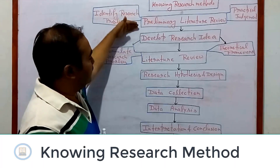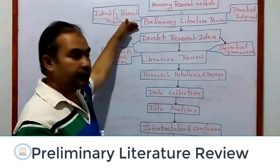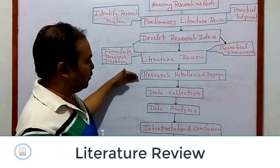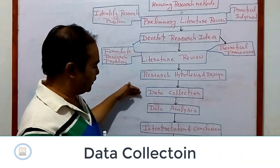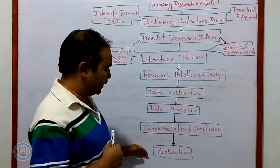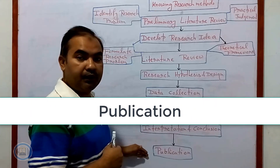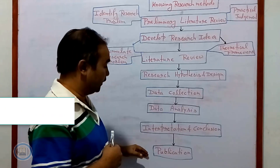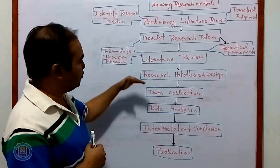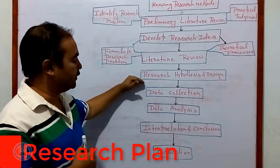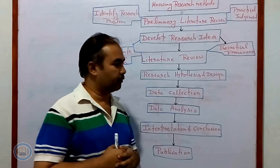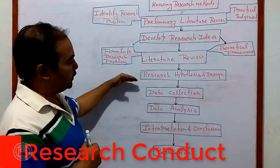The first step is knowing the research method. The second is a preliminary literature review, followed by developing the research idea, literature review, research hypothesis and design, data collection, data analysis, and interpretation and conclusion. The last process is the dissemination of the research, which is called publication. In this figure, it is divided into two sections: up to research hypothesis and design is called research planning, and the remaining portion is called the research conduct process.